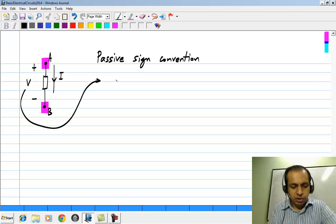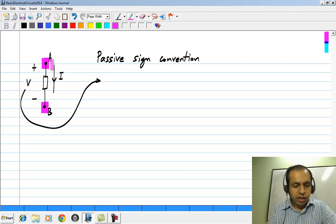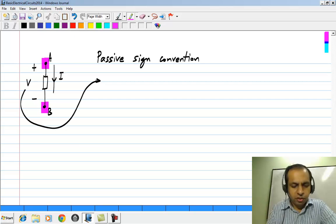If we define the voltage like this, then the current I should be defined as going into terminal A, that is whichever terminal is defined as the positive value for the voltage.